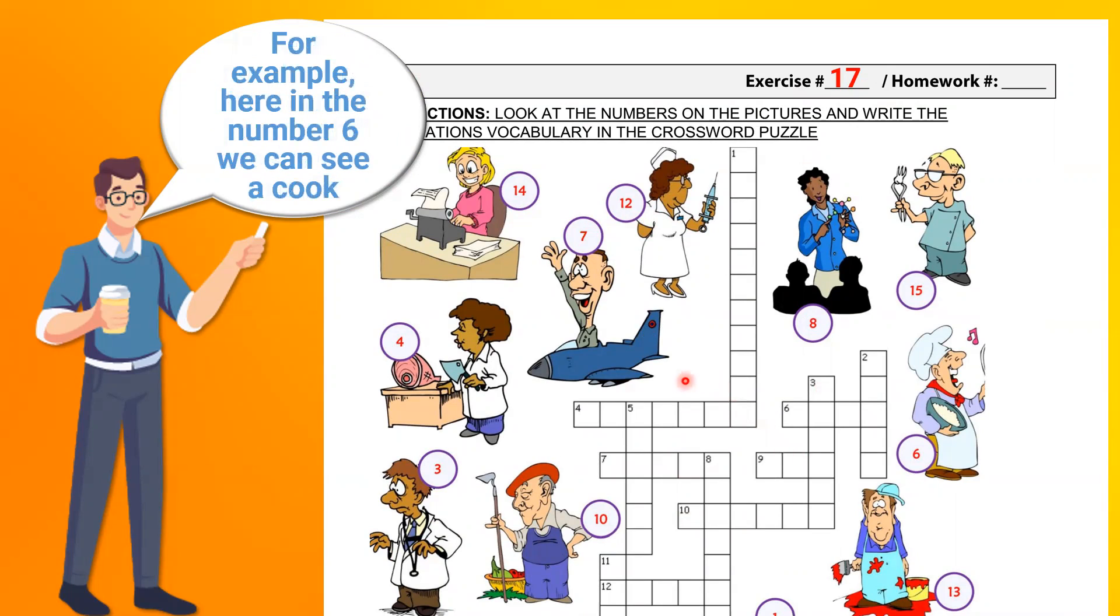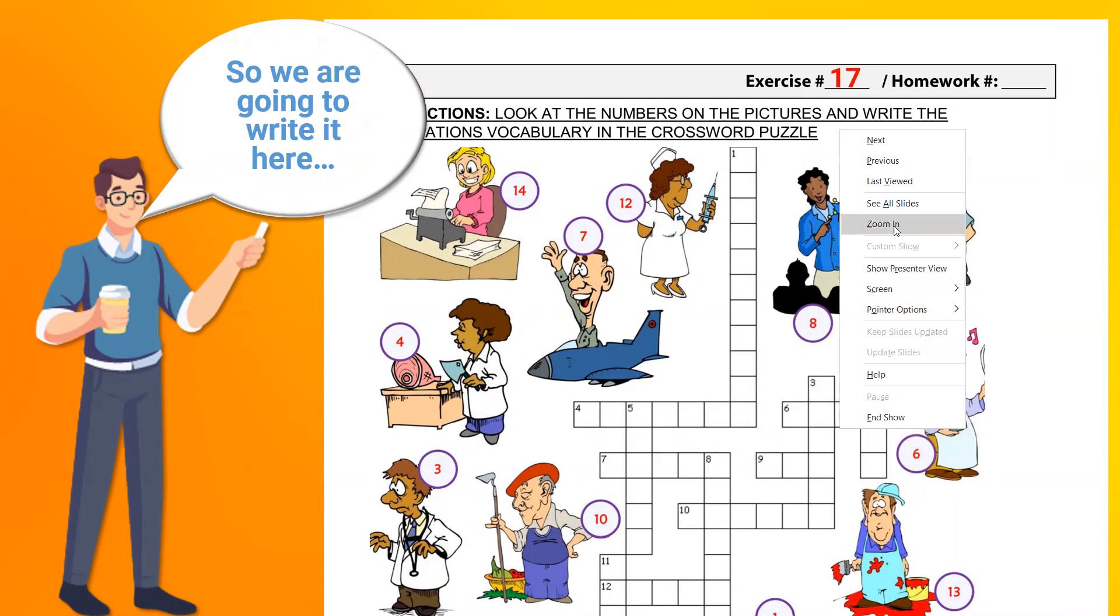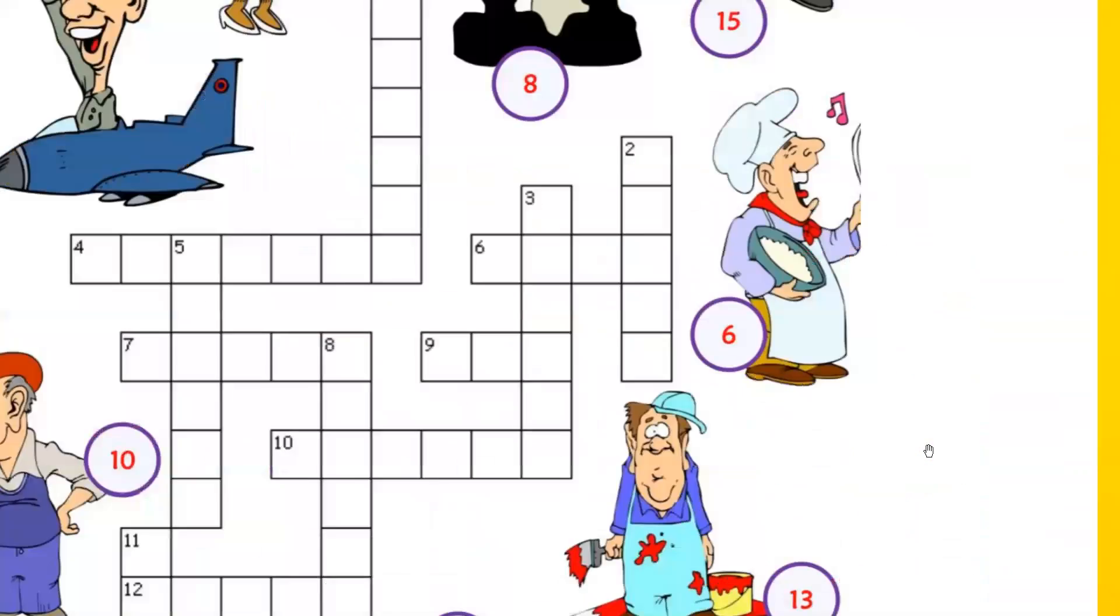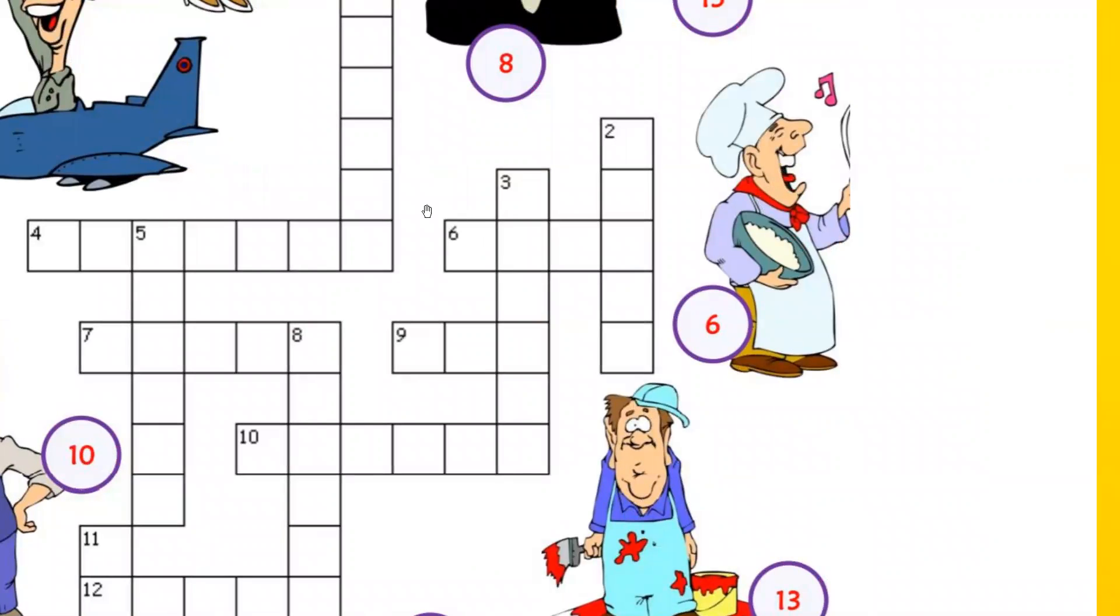For example, here in number six we can see a cook. So we are going to write in here number six.